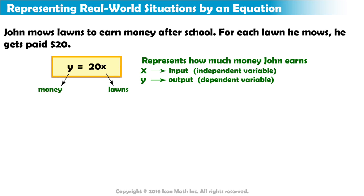The amount of money John earns is dependent on the number of lawns he mows. So x is the independent variable — the number of lawns he mows — and y is the dependent variable — how much money he earns.